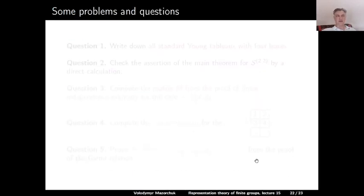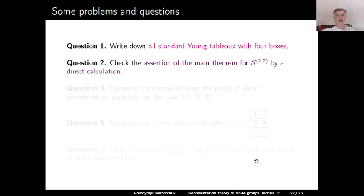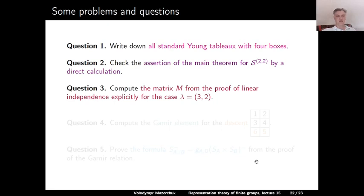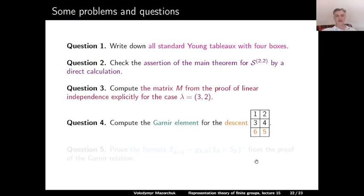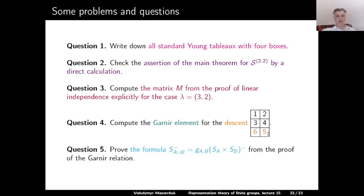Let us finish with some problems and questions. Question 1: Write down all standard Young Tableaus with four boxes. Question 2: Check the assertion of the main theorem for the Specht module S^{2,2} by a direct calculation. Question 3: Compute explicitly the matrix M from the proof of linear independence in the case when lambda = (3,2). Question 4: Compute the Garnier element for the descent (6,5) in the tableau of shape (2,2,2) with 1,2 in the first row; 3,4 in the second row; and 6,5 in the third row. Question 5: Prove with all details the formula that the anti-symmetrizer for S(A∪B) equals the Garnier element for A,B times the anti-symmetrizer for S(A)×S(B).